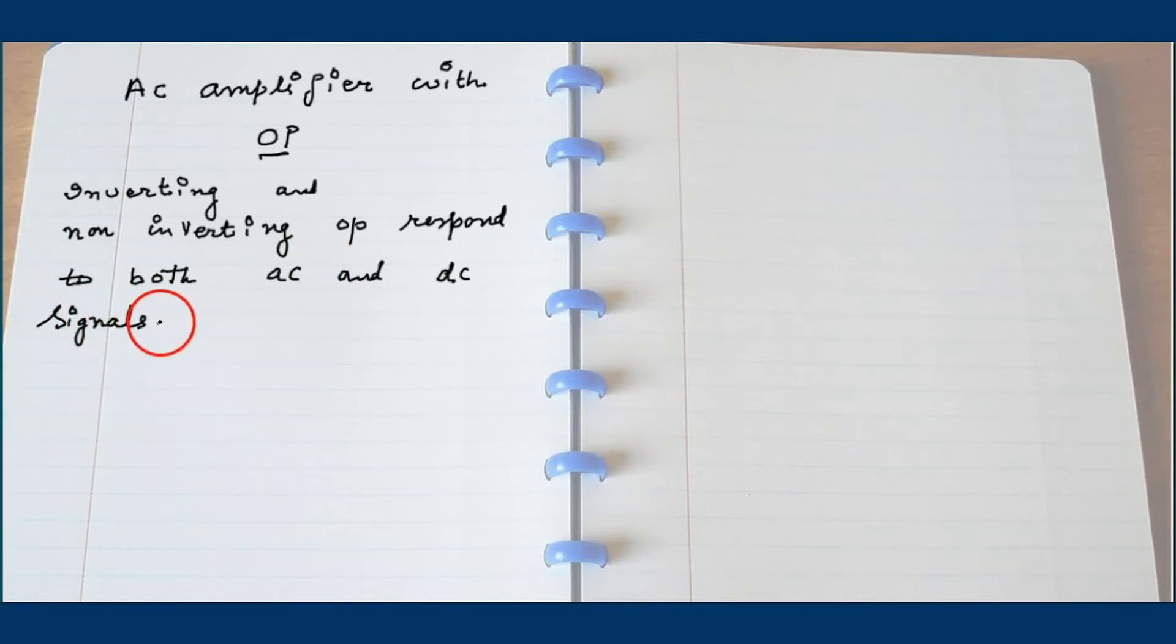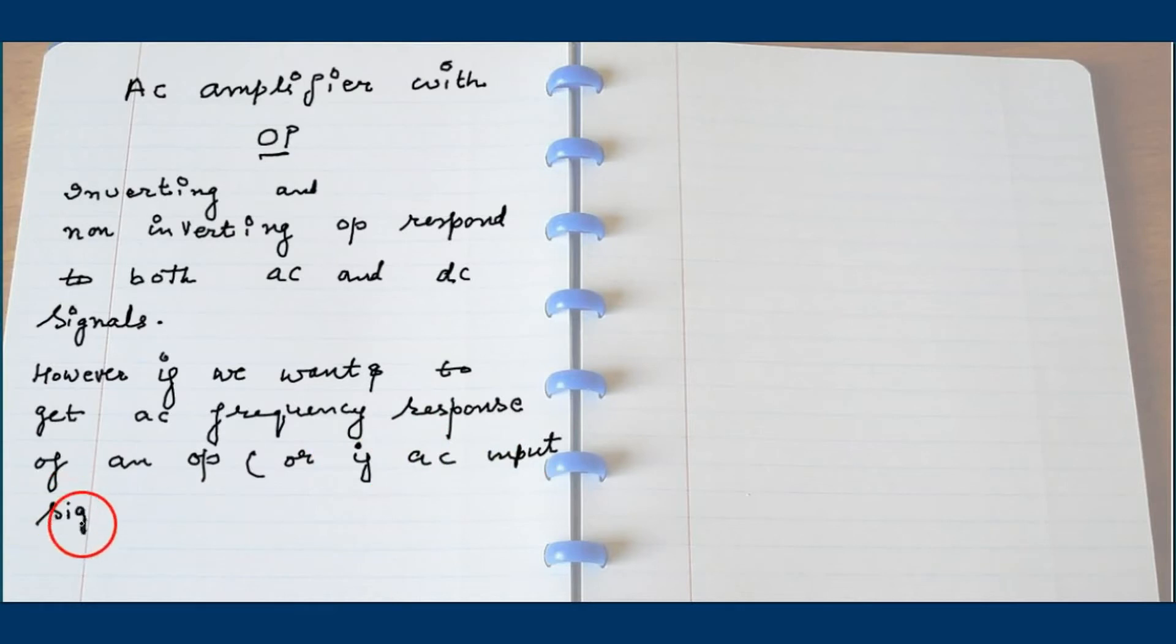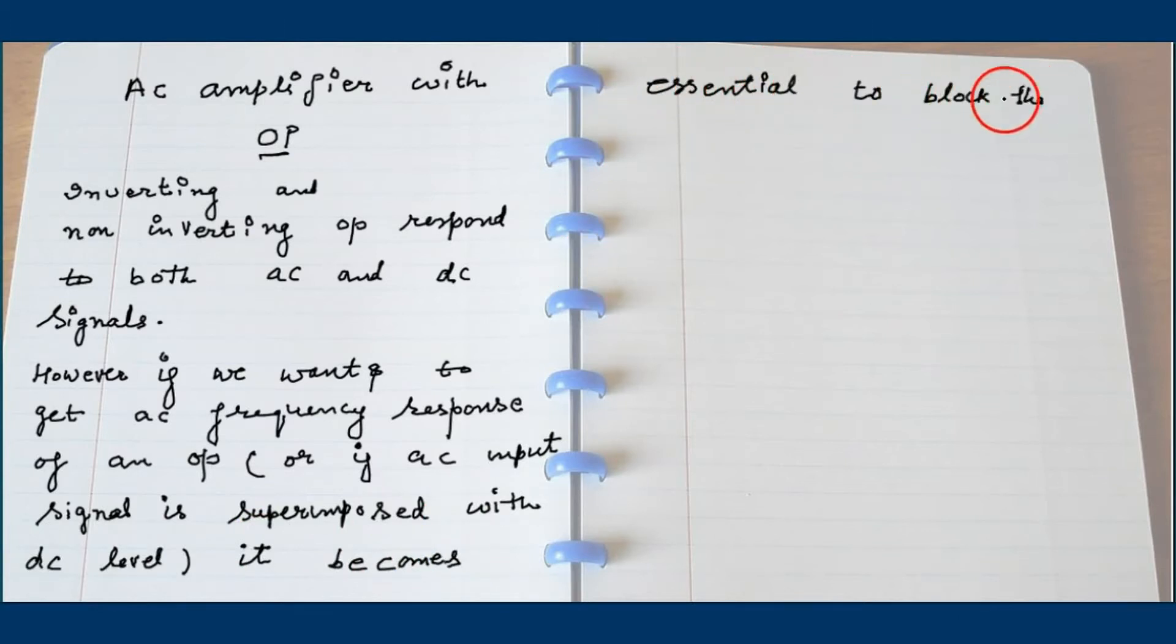Sometimes the signal has AC as well as DC, but we want only AC to get amplified. We don't want the DC. So sometimes the signal is superimposed, AC signal superimposed by DC level, so then it becomes essential to amplify only the AC signals and to block the DC components.